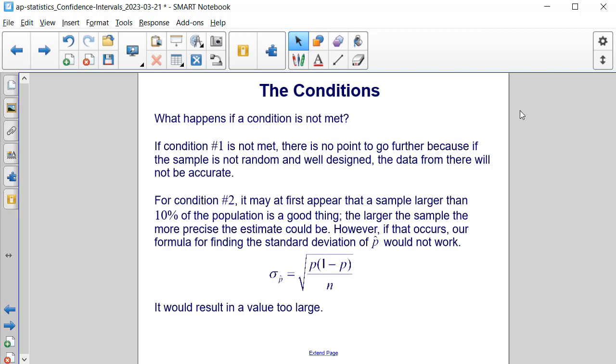For condition number 2, it may at first appear that a sample larger than 10% of the population is a good thing. The larger the sample, the more precise the estimate could be. However, if that occurs, our formula for finding the standard deviation of p-hat would not work.